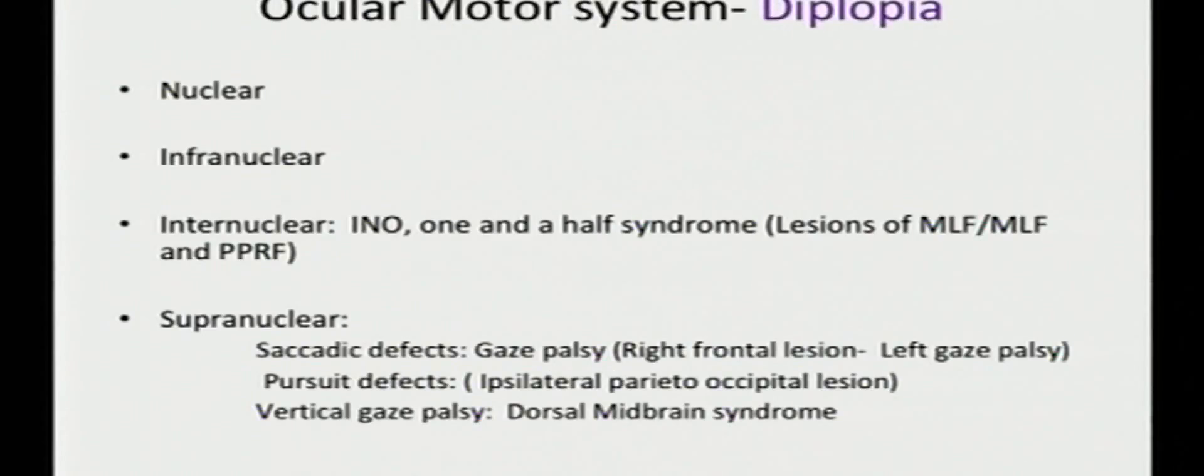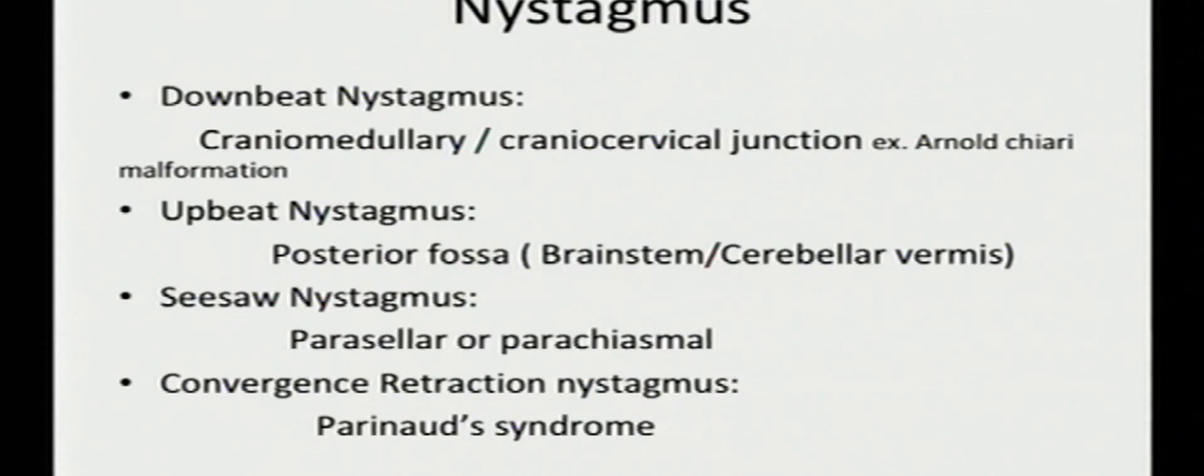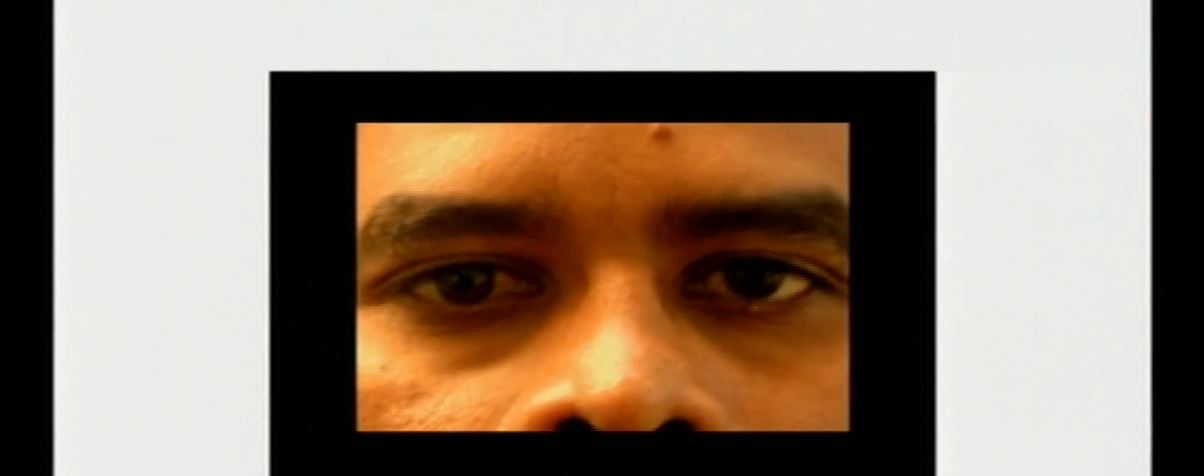The last one is diplopia and nystagmus due to efferent disturbances. The problem could be anywhere in the nuclear level, internuclear level or the supranuclear level. Downbeat nystagmus will point towards cranio-medullary or cranio-cervical junction problem. See-saw nystagmus due to parasellar problem and convergence retraction nystagmus due to Parinaud syndrome. Just a small video showing the see-saw nystagmus. The next one is a downbeat nystagmus in a Parinaud syndrome.